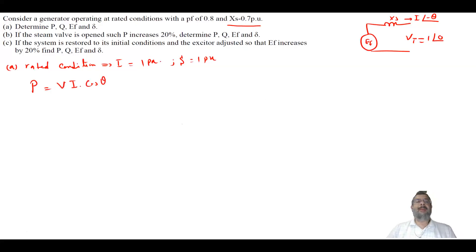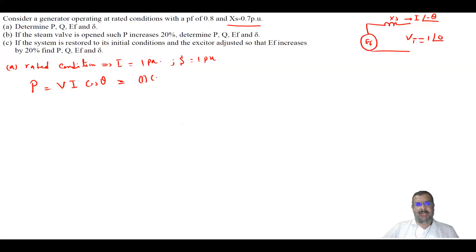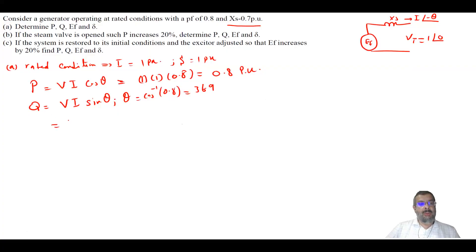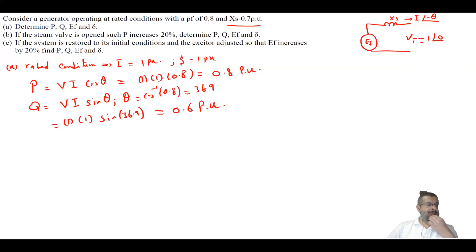P equals V times I times cosine theta. Since we work in per unit, there is no root 3, as it behaves like a single-phase system. So P equals 1 times 1 times 0.8, giving P equals 0.8 per unit. For Q, theta equals cosine inverse of 0.8 which is 36.9 degrees, so Q equals 1 times 1 times sine of 36.9, giving Q equals 0.6 per unit.